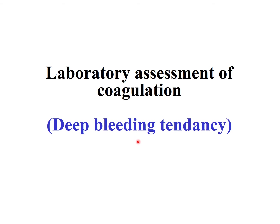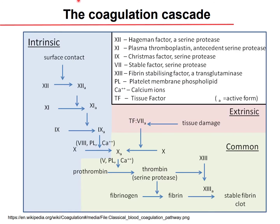Now let's look at how we assess coagulation, which is clinically manifested with a deep bleeding tendency. Recalling the coagulation cascade from physiology, there are three major parts of the coagulation pathways in laboratory correlation, although physiologically these pathways cannot be distinctly separated.